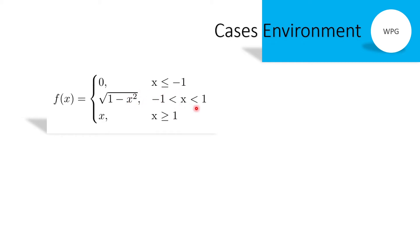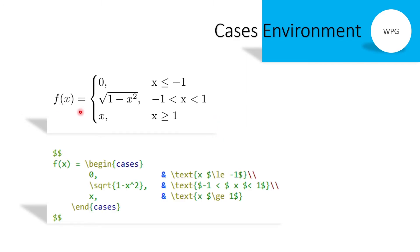This next example has three cases. Write each case separated by the ampersand symbol, and start each new case with the line break command. In math mode using double dollar symbol, write f(x) equals begin cases, then the first case: 0, ampersand, text command x less than or equal to minus one. Line break for the second case: square root of (1 minus x squared), ampersand, text condition minus one less than or equal to x less than one. Line break for the third case: x, ampersand, text condition x greater than or equal to one.